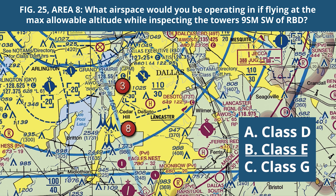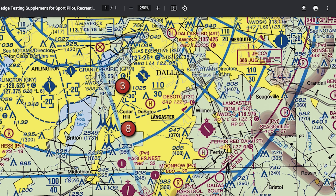If we fly a little bit higher, we would be in class B, but we wouldn't actually be allowed to fly higher without an additional special waiver. The correct answer is class E. Very tricky question. I hope this is helpful and gives you a sense of how we teach this stuff.